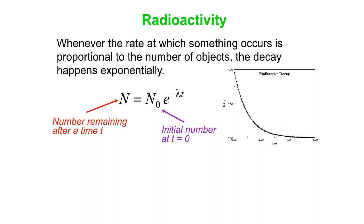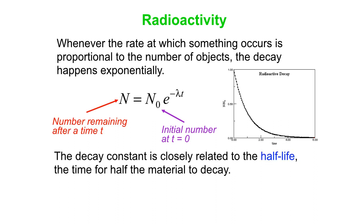Again, that's the initial number t equals zero, the number remaining. The decay constant is related to the half-life via this equation. The half-life t1 half is natural log of 2 divided by the decay constant. Natural log of 2 to 3 significant figures is 0.693.